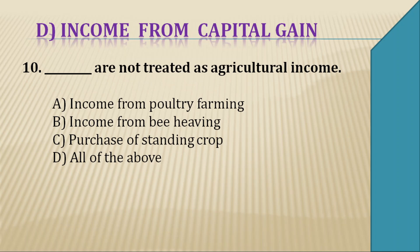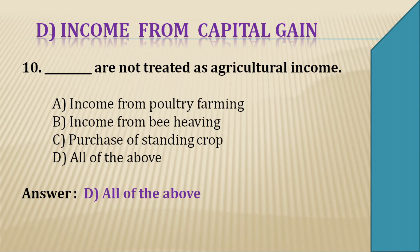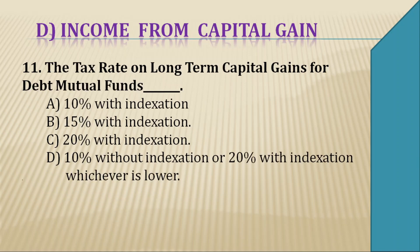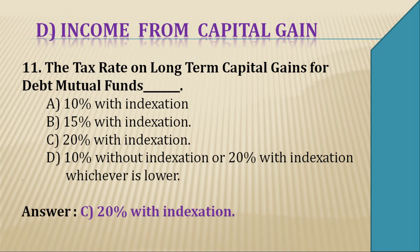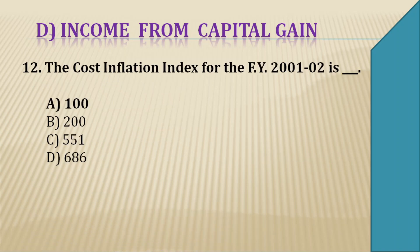Question 10: Which items are NOT treated as agricultural income? Options are income from poultry farming, income from beehive, purchase of standing crop, or all of the above. All of these are not treated as agricultural income, so the right answer is D — all of the above. Question 11: The tax rate on long-term capital gains for a debt fund is — 10%, 15%, 20%. The right answer is C — 20%.